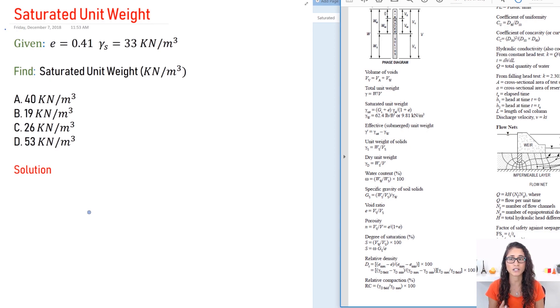Okay, so we are given the void ratio which is 0.41. The unit weight of the solid is 33 kilonewtons per cubic meter, so know already that we have to use SI units and we need to find the saturated unit weight.